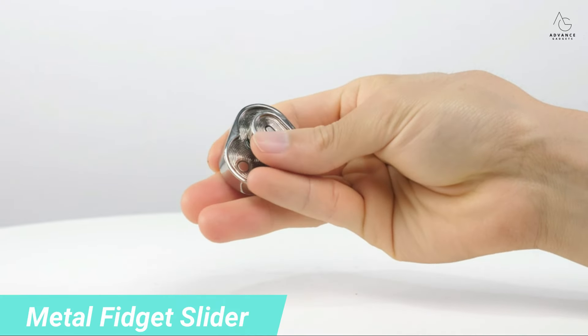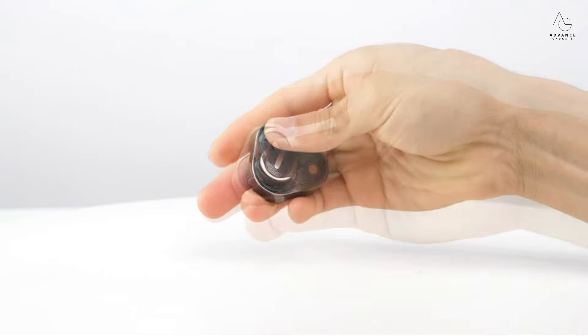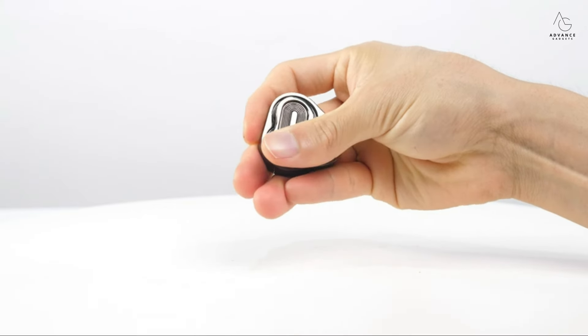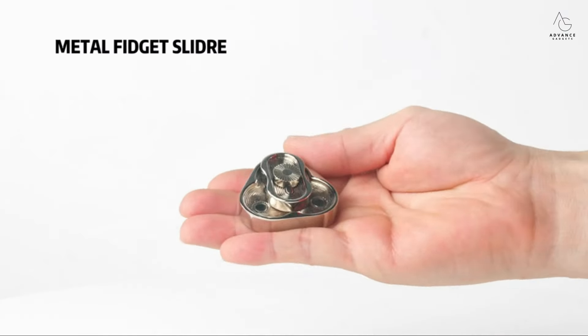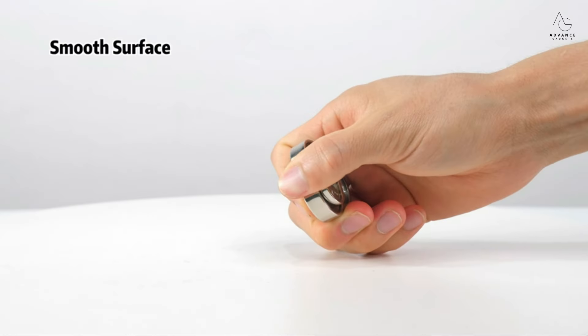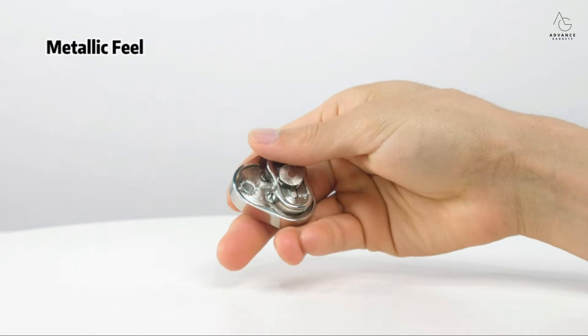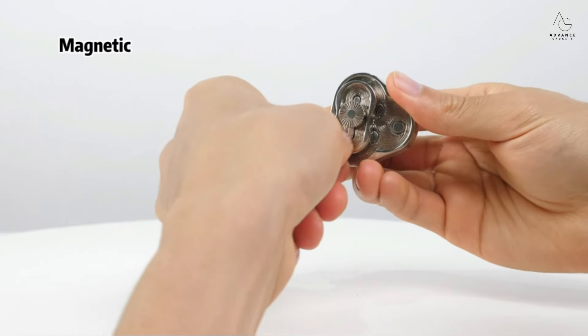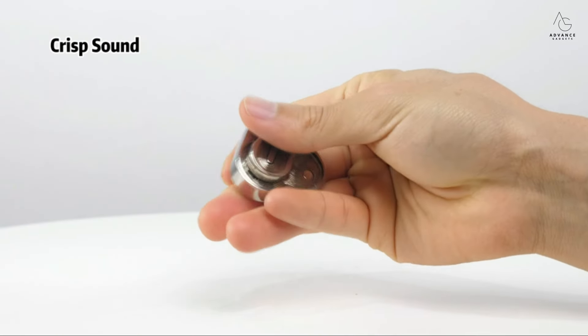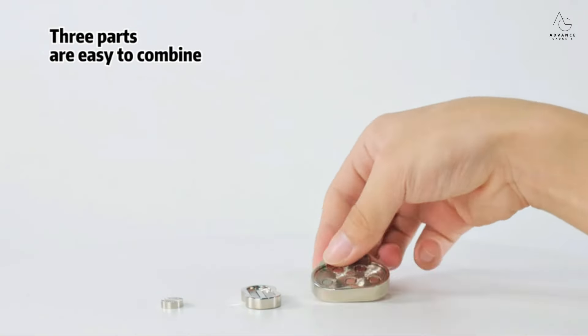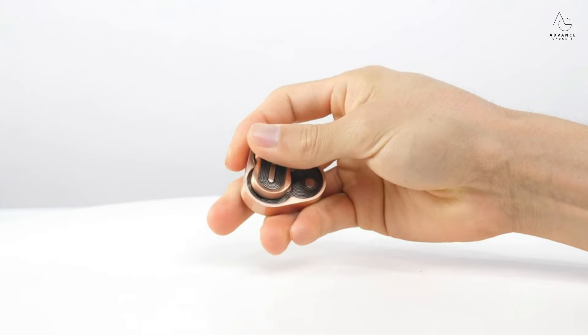This unique fidget toy features a captivating design with three metal bodies, including novel triangle and clover shapes. The front and back of the slider are adorned with spiral textures. Crafted with precision, the surface of the slider is delicately smooth, ensuring a comfortable grip for hours of use. Not only is this fidget slider a source of entertainment, but it also serves as a stress-relieving tool. You'll find yourself endlessly entertained by the captivating motion of this fidget toy.